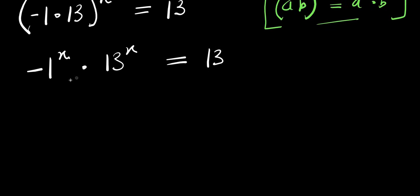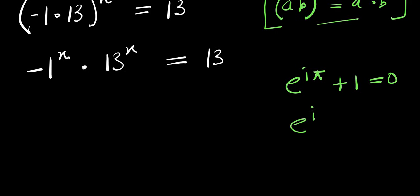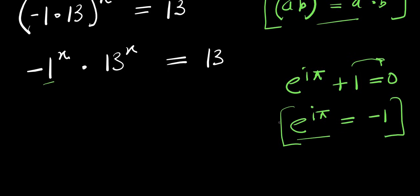Right here we can consider this identity again. If you have e to the power of i times pi plus 1, this will give you 0. This is Euler's identity. From here, e to the power of i times pi equals negative 1 by moving the 1 over. So what we will do is replace this negative 1 with e to the power of i times pi.